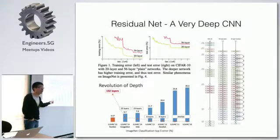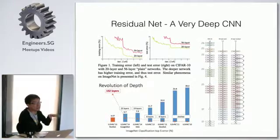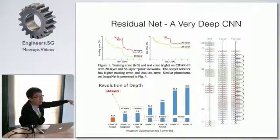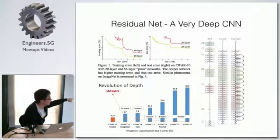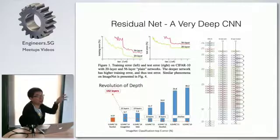It outperformed the human performance, meaning they compared asking humans to recognize the image and the computer to recognize the image. The error rate of this method is lower than what humans can achieve. And this dataset I think contains like a few millions of images over 1,000 categories, so they need to identify 1,000 types of objects.